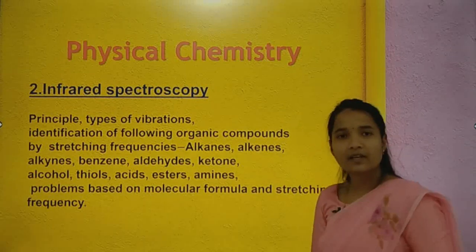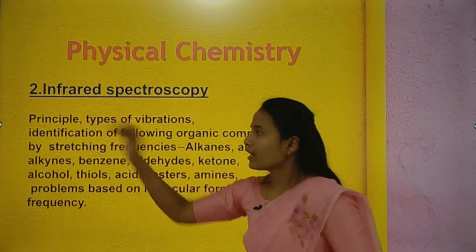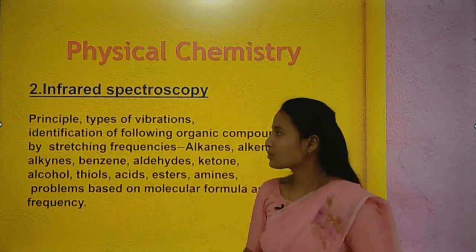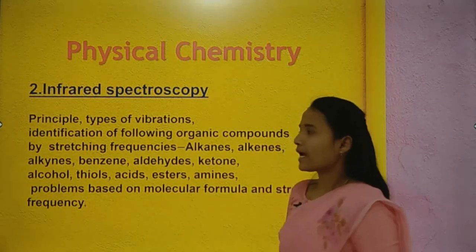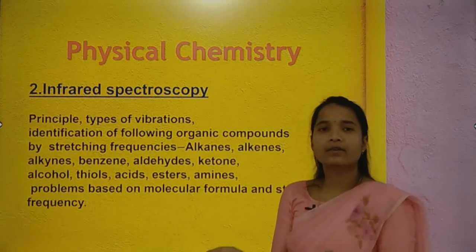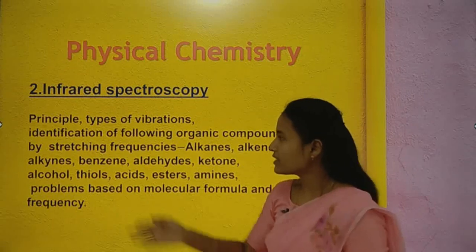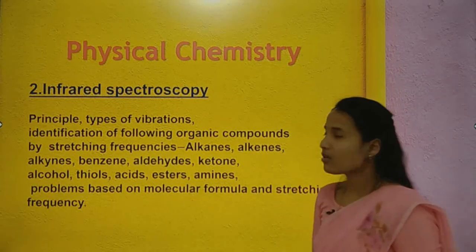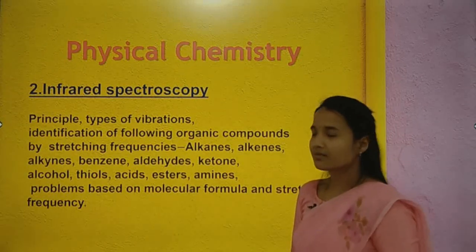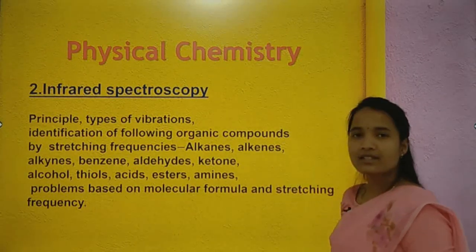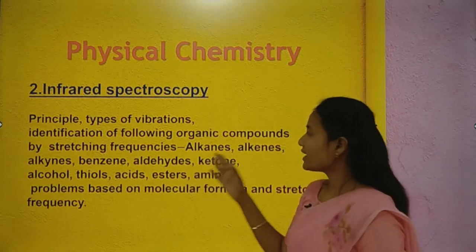The next chapter is infrared spectroscopy. Topics include the principle of IR spectroscopy, types of vibrations such as stretching and bending, and identification of organic compounds by stretching frequencies — including alkanes, alkenes, alkynes, benzene, aldehydes, and ketones.